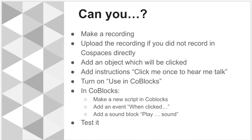And now it's your turn. You're going to make a recording and upload it if it's not already in CoSpaces. Then choose the object that's going to be clicked and add instructions so your audience knows what they have to do. Then you're going to do some programming in code blocks: make a new script, add an event, add the sound, and then test it. Make sure as the audience it works. Good luck.